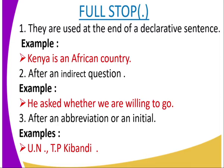Next we're going to look at full stops. Full stops are used at the end of a declarative sentence — a sentence that expresses statements or opinions. For example: 'Kenya is an African country.' We place our full stop at the end of the sentence. Full stops are also used after an indirect question. For example: 'He asked whether we are willing to go.'